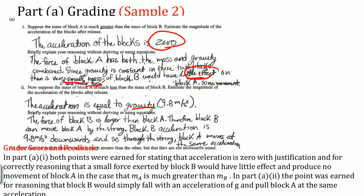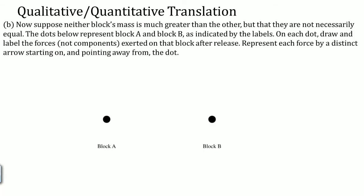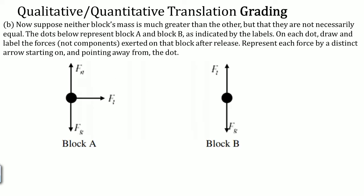The next part says: now suppose either block mass is much greater than the other, but they are not necessarily equal. You are asked to draw and label the arrows. A key part here is that the arrows must be indicative of how strong the force is — the length and magnitude of the arrows mean something.